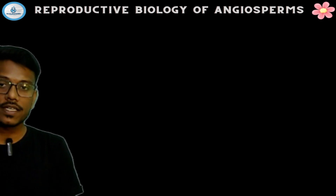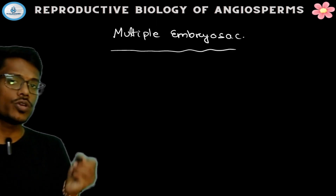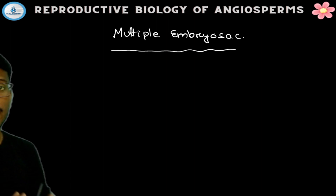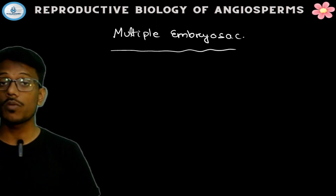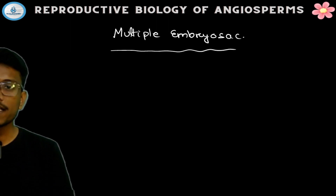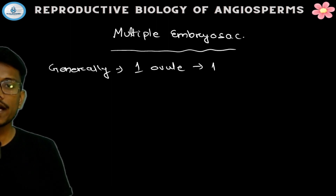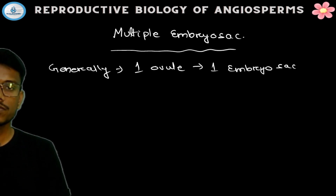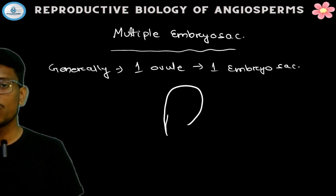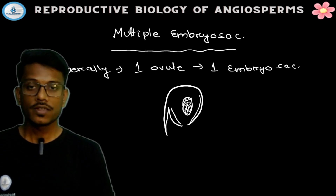Generally we know that inside one ovule there is formation of only one embryo sac. But in some cases there may be chances of formation of more than one embryo sac inside one ovule. Normally, one ovule has one embryo sac — a seven-cell, eight-nucleated structure. This is the normal condition.